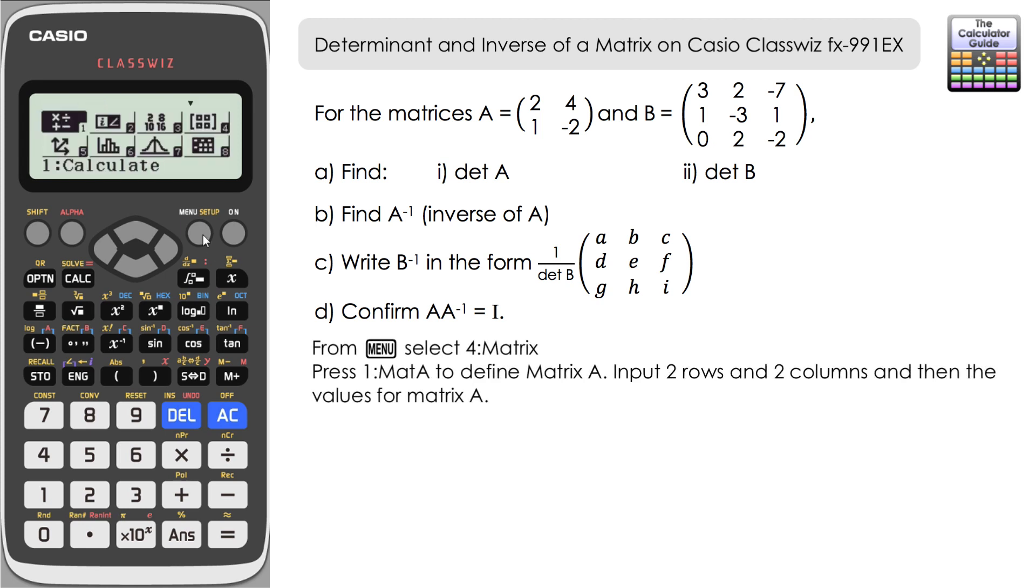So first off you need to go to menu and then 4 for matrix. Let's start by defining the matrices, so it's 1 for matrix A. It's 2x2 rows, 2 columns, and then input the values for matrix A.